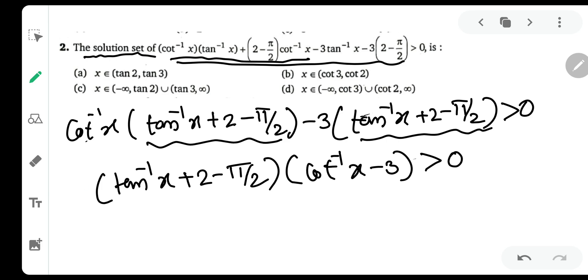Let us take minus 1 common from the first bracket. What you will get is π by 2 minus tan inverse x minus 2 and then cot inverse x minus 3 greater than 0.